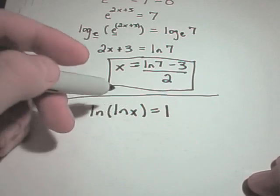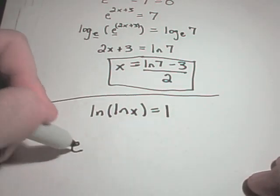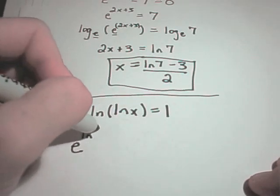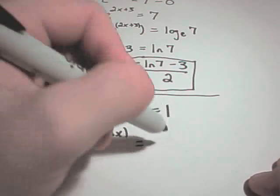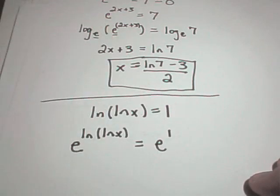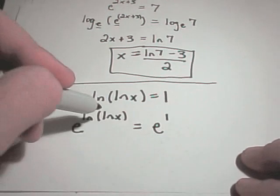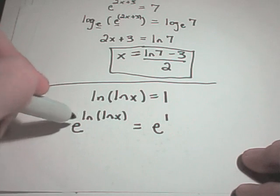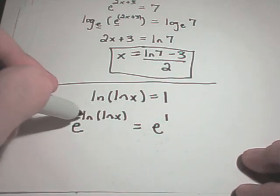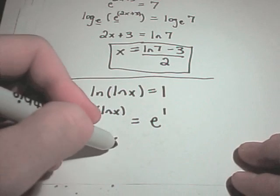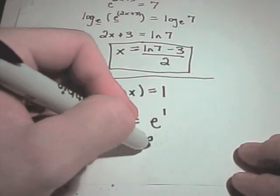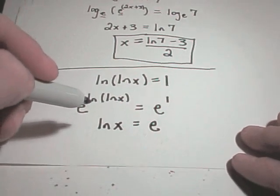Well, again, my variable is trapped inside of a logarithm. What I'm going to do is I'm going to take e and I'll take ln of ln of x and raise it to the e power on the left. I'll take e and do the same thing on the right. Well, by this cancellation property, it says when you have e raised to the log base e, whatever's inside you're left with. So, I'll have ln of x left on the left side equals e.